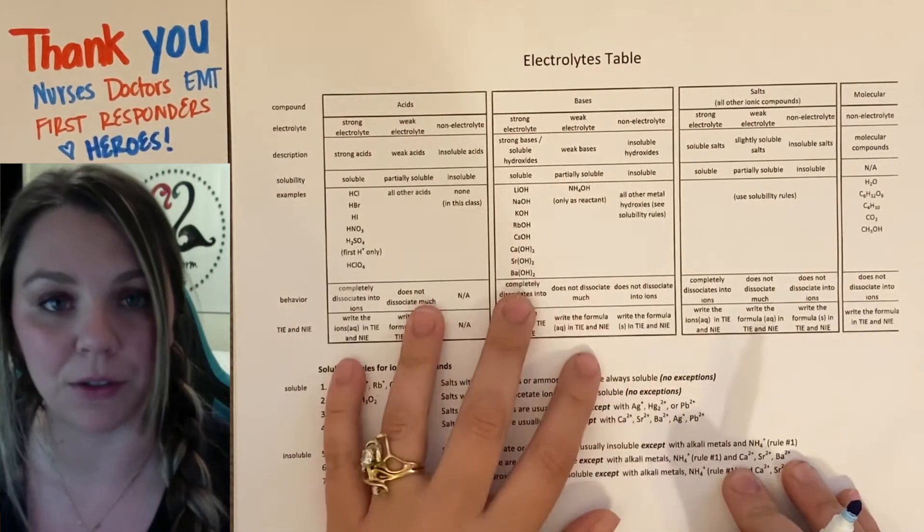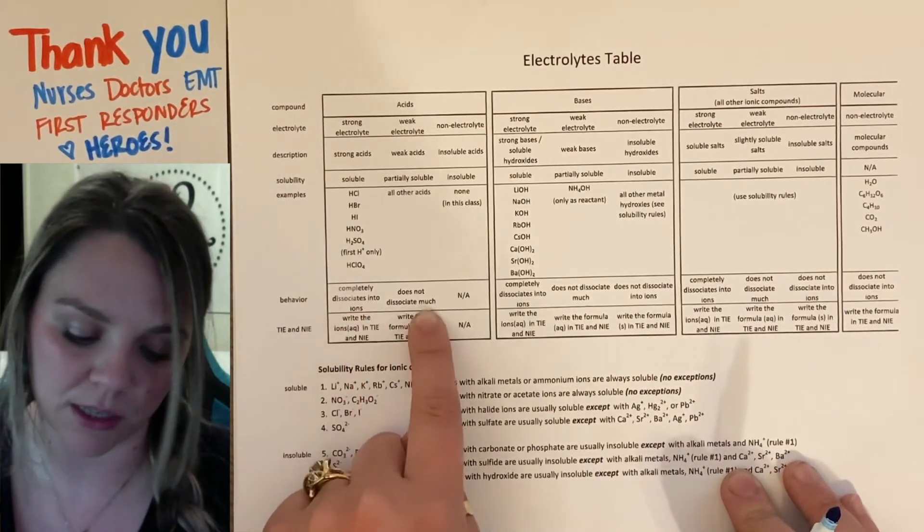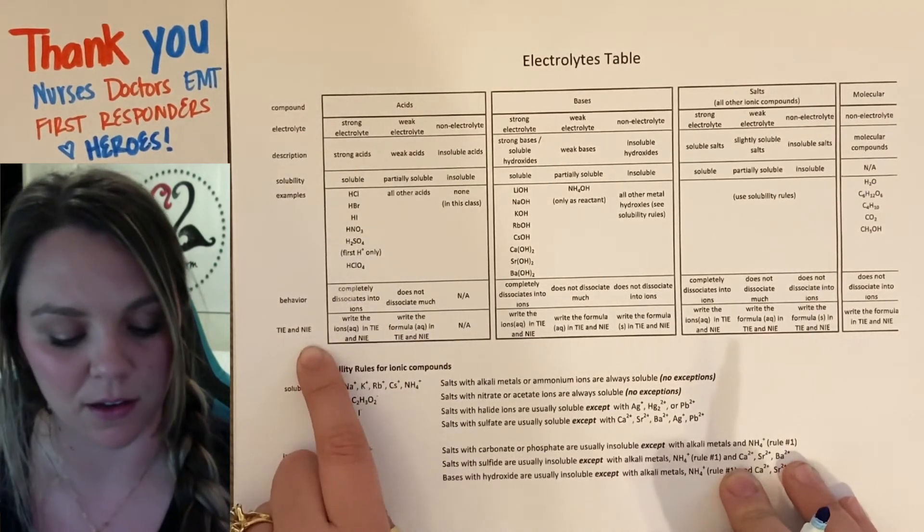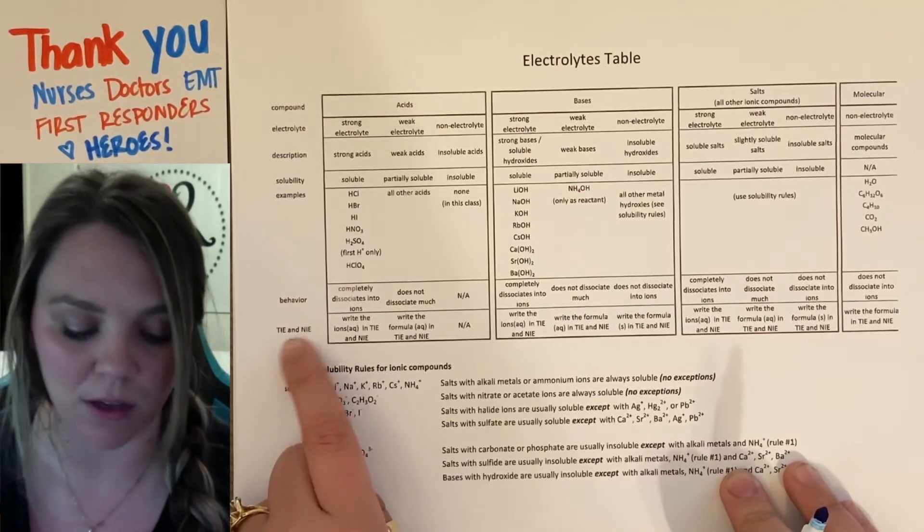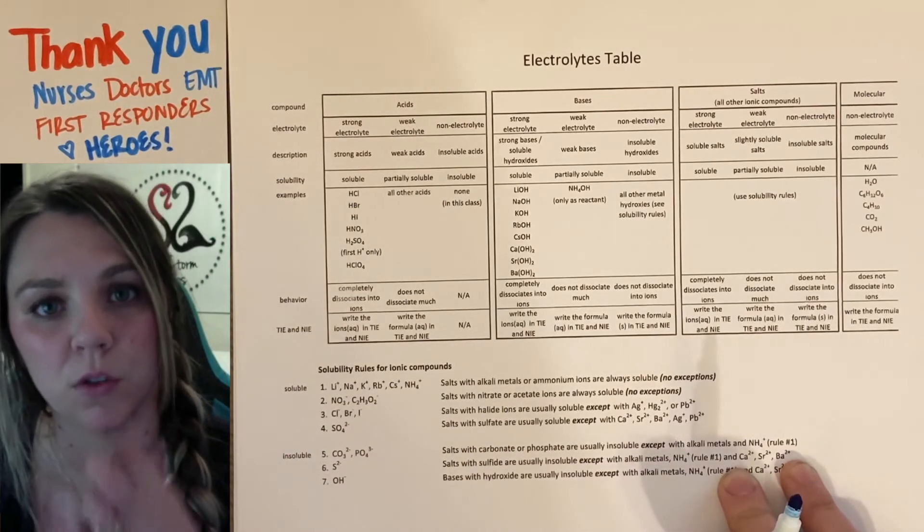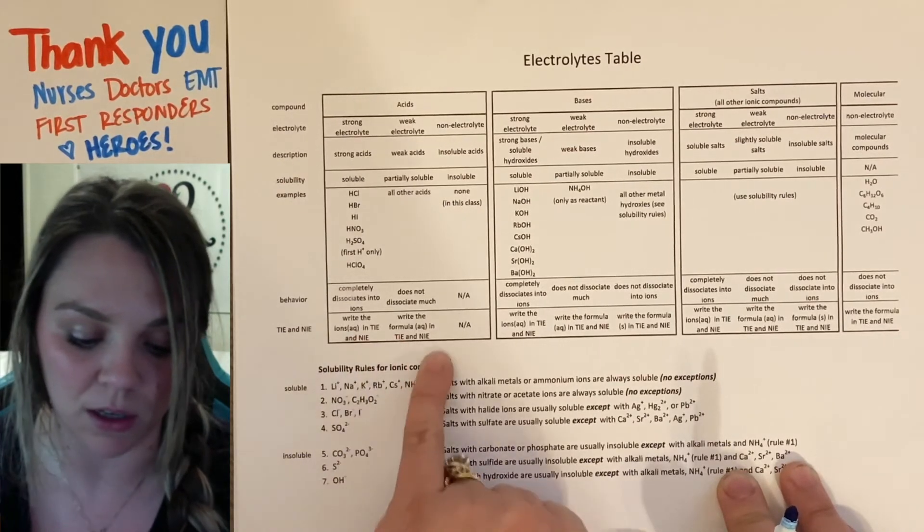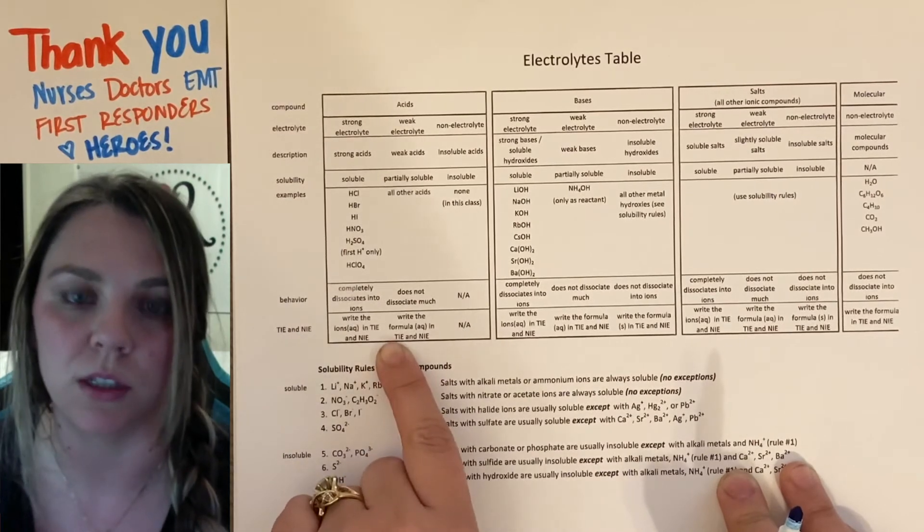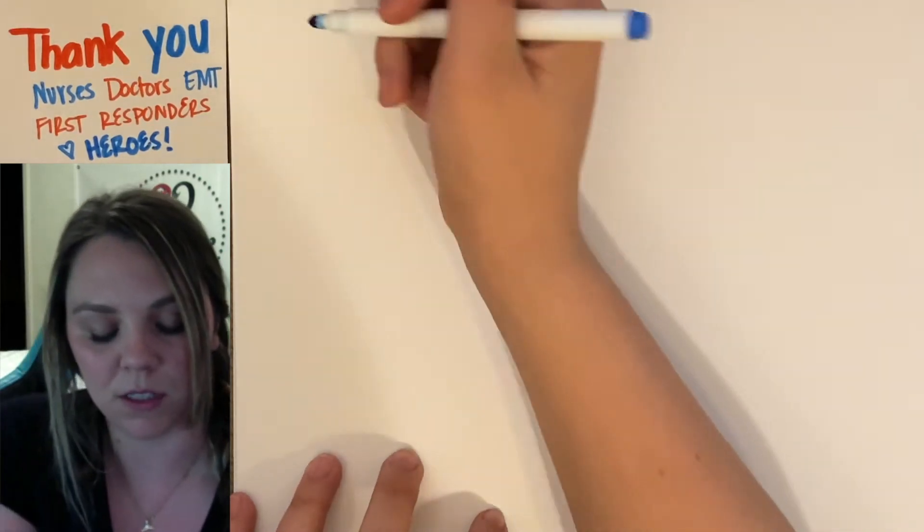And on your electrolytes page, if you look down here, it says behavior completely dissociates versus does not dissociate much for strong and weak. And then it says TIE and NIE. So that's for your total ionic equations and your net ionic equations. So whenever we're writing out those total and net ionic equations, it tells you to write the ions as AQ and it says to write the formula with AQ. So it tells you basically what to do, just so you know what TIE and NIE mean.